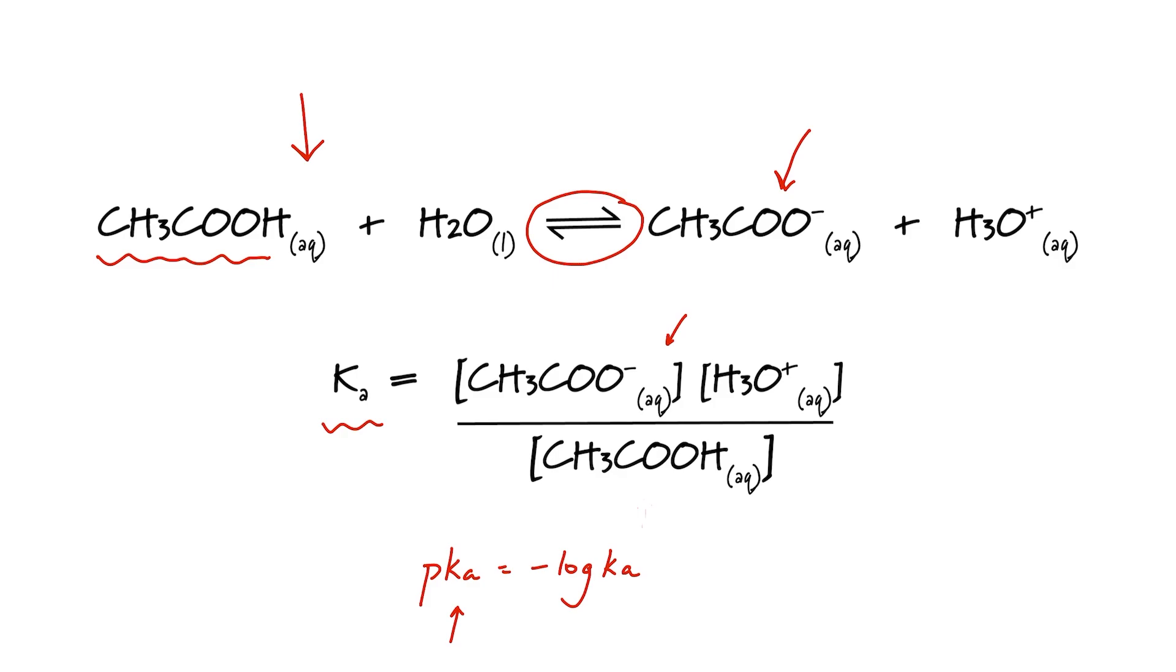So minus the log of the Ka for ethanoic acid, that would be minus the log of 1.7 times 10 to the minus 5, comes out to be 4.8.